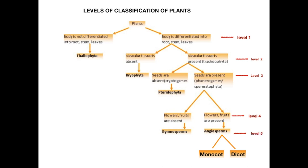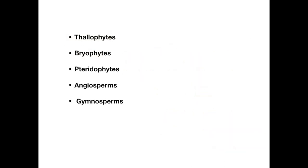The fifth criteria is the number of cotyledons in the seed. If the seed has one cotyledon, the plant is a monocot — like rice, maize, and wheat. If the seed has two cotyledons, the plant is a dicot — for example, pulses, pea, apple, and mango all have two cotyledons in their seed. You need to remember the five groups of plants for further studies in upcoming classes.